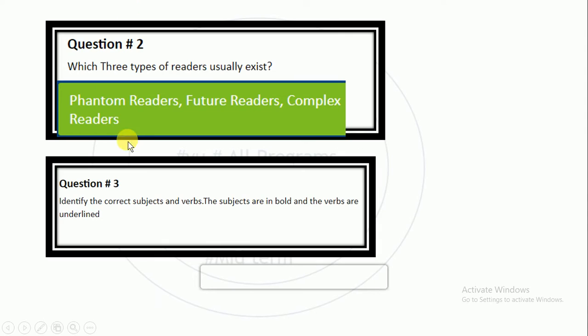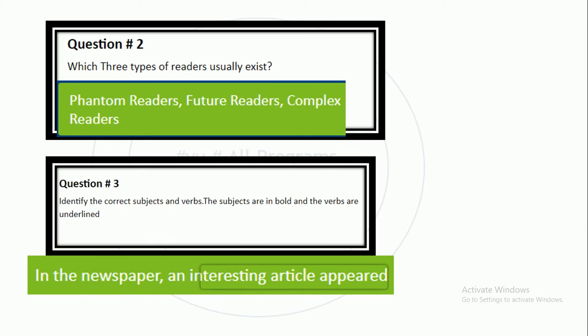Identify the correct subjects and verbs — subjects are in bold and verbs are underlined. The right option is: 'In the newspaper, an interesting article appeared.' The subject is bold and the verb is underlined.